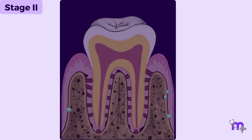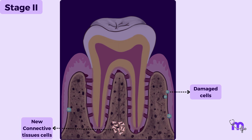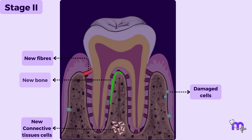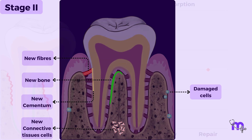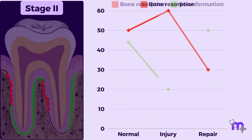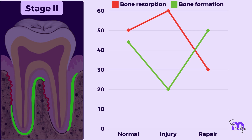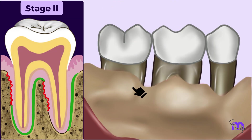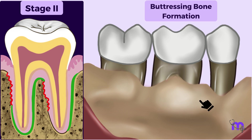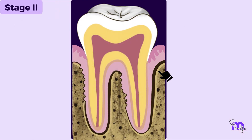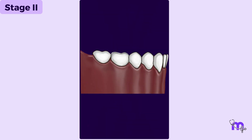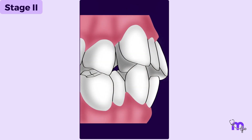In stage 2, the body tries to repair the injury by removing damaged cells. It forms new connective tissue cells, fibers, bone, and cementum. There is decreased resorption and increased formation of bone. The body attempts to compensate for lost bone by forming new bone — this is called buttressing bone formation. The repair process occurs when the offending forces are removed or if the tooth moves to escape from them.